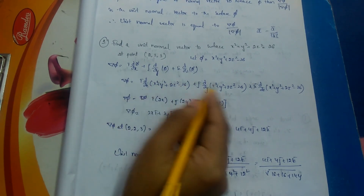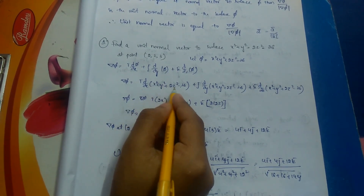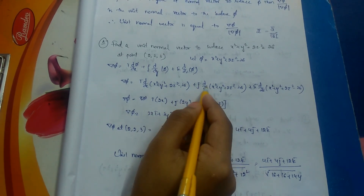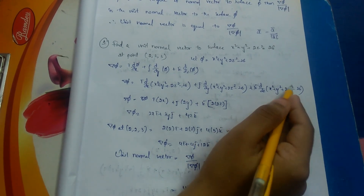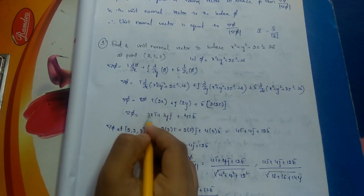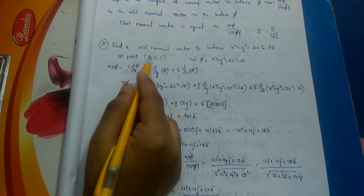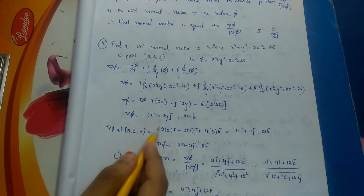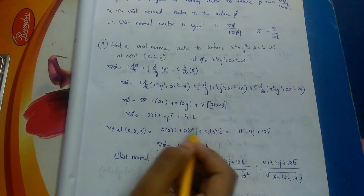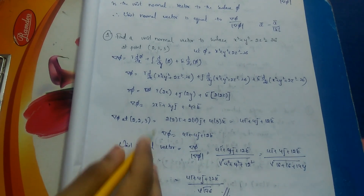Differentiating with respect to x, y, and z: ∇φ = 2x i̅ + 2y j̅ + 4z k̅. At the point (2, 2, 3), substituting x=2, y=2, z=3: ∇φ = 2(2) i̅ + 2(2) j̅ + 4(3) k̅ = 4i̅ + 4j̅ + 12k̅.